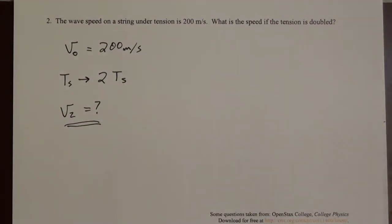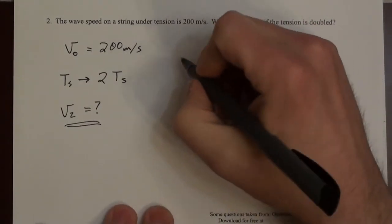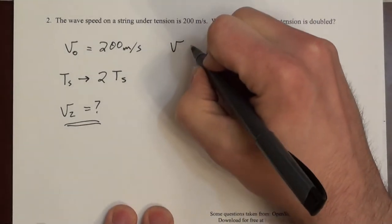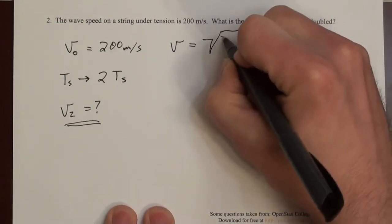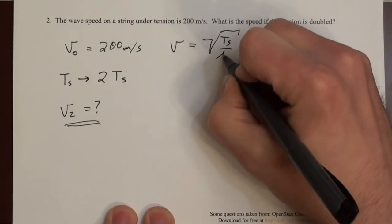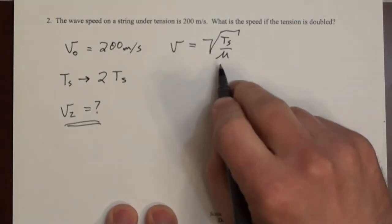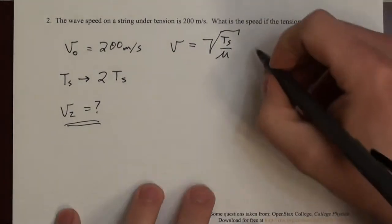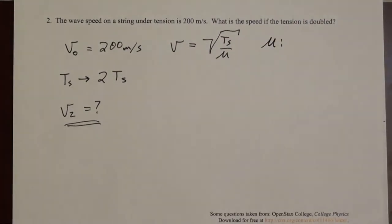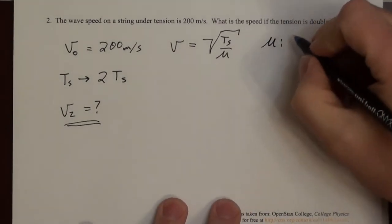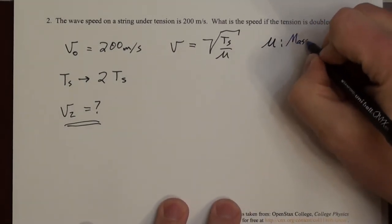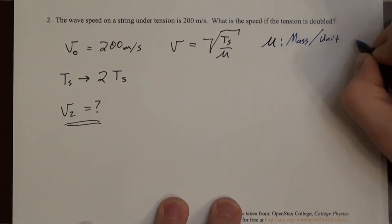Well, how does the velocity change? So how do we relate wave speed on a string to tension? The answer is velocity is the square root of tension divided by mu. And mu here is the mass per unit length, or the linear density.